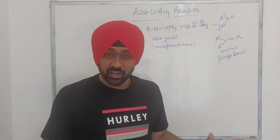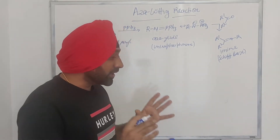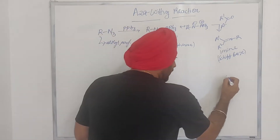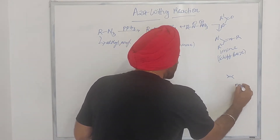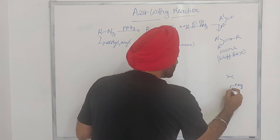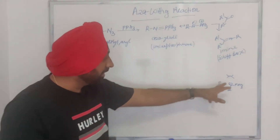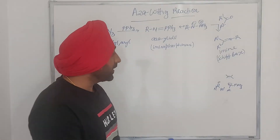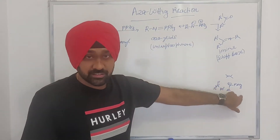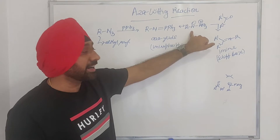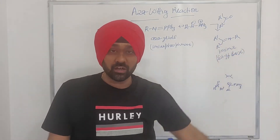In a nutshell, what is the Aza-Wittig reaction? In the normal Wittig reaction, you form a carbon-carbon double bond. What you have is PPh₃, you generate a carbonyl, and you react with a carbonyl — an aldehyde or ketone — to form a carbon-carbon double bond. In the Aza-Wittig reaction, instead of a carbon ylide, what we generate is an azaylide, and the final product is an imine, which we also call a Schiff base.